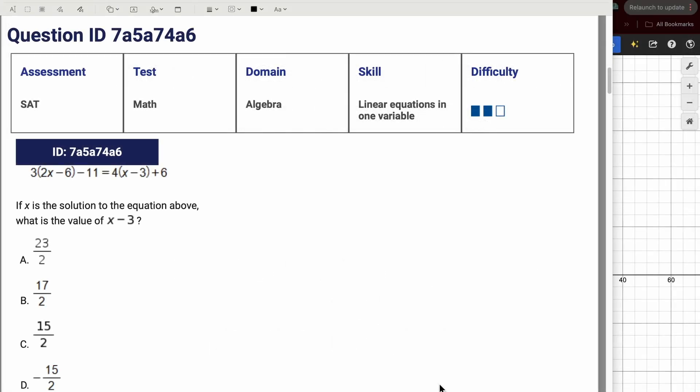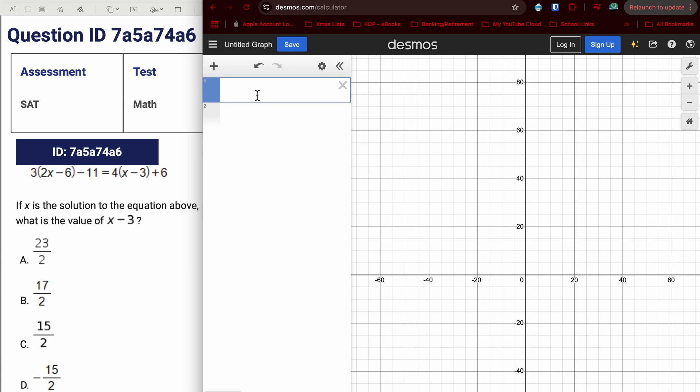This SAT math question is obviously a single variable equation and it could be done by hand. However, I think it can be done more quickly using Desmos. We've got an equation we would need to solve for X, plug X in and then subtract 3 to come up with our answer. So the way you can use Desmos to make this quicker, plug in the left hand side of the equation and the first one. Then take the right hand side of the equation, plug that in, and then you can see the point of intersection.